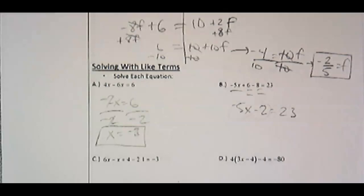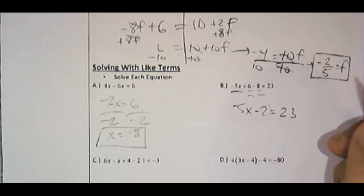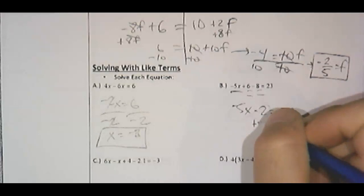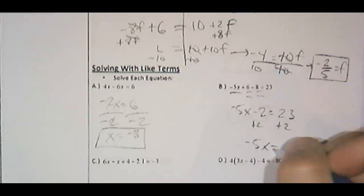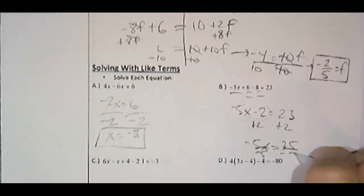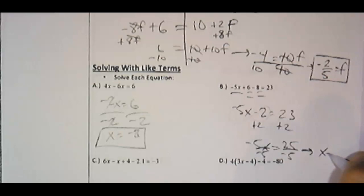I'm going to undo adding and subtracting. Remember, DCMAM, distribute, combine like terms, move the variables to one side, add, subtract, multiply, divide. So anyhow, we're on the add, subtract step. Negative 5x equals 23 plus 2, which is 25. If you divide both sides by negative 5, you have your answer. x equals negative 5.